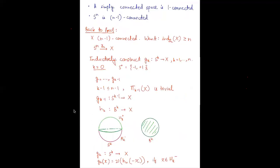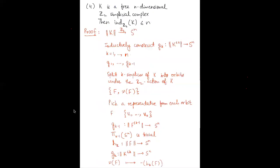We want to show that the index of X is at least as big as n. Basically, we construct a Z2 map from S^n to X. I'll skip this proof for now to ensure we go through the later topics as well — just take this result for granted: if X is (n-1)-connected, then there's a Z2 map from S^n to X. The last property: if K is a free n-dimensional Z2 simplicial complex, then its index is less than or equal to n.